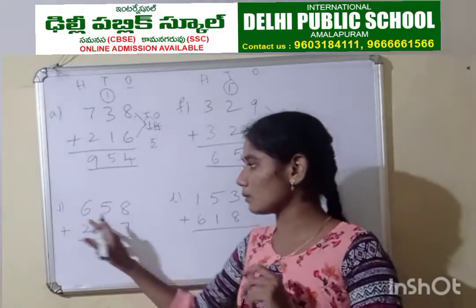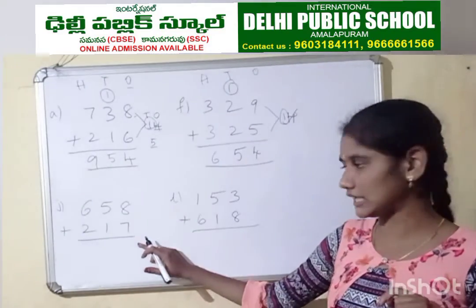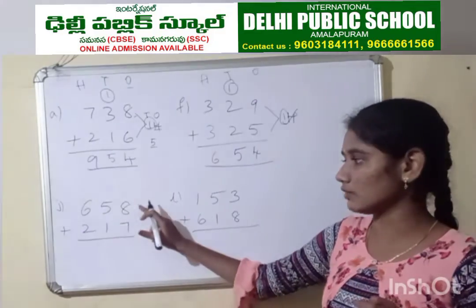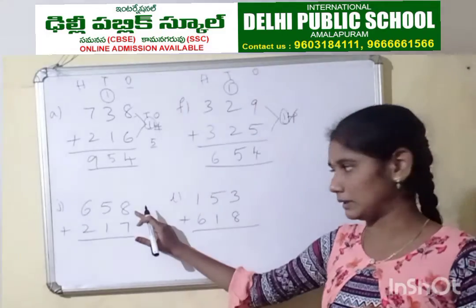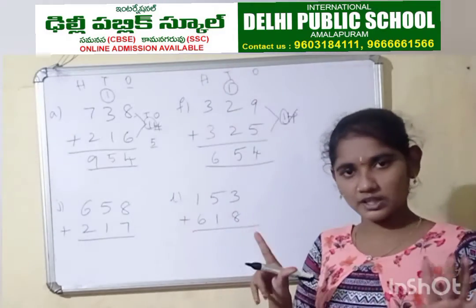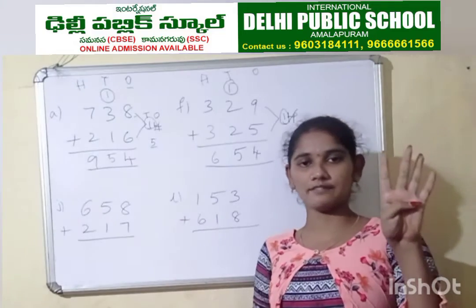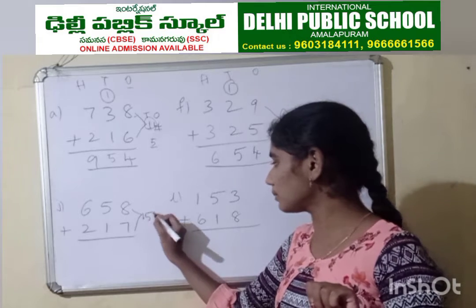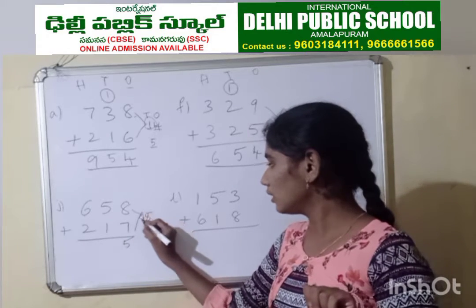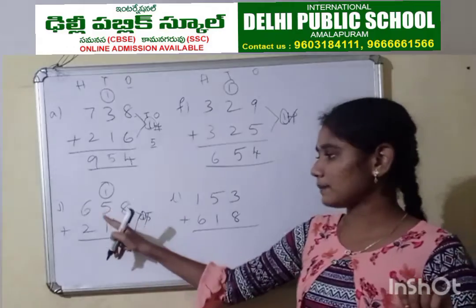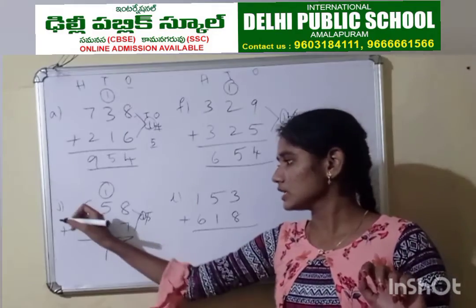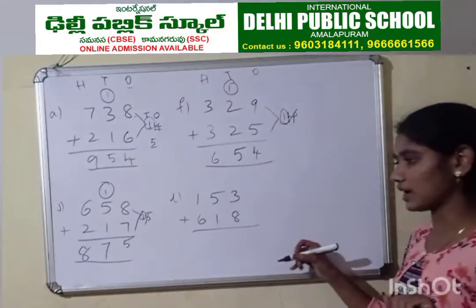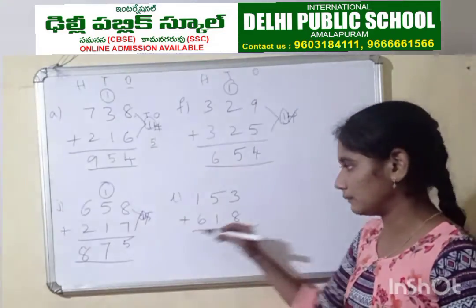Let's see another problem. 658 plus 217. 8 plus 7: keep 8 in mind, take 7 fingers. Count 8 after: 9, 10, 11, 12, 13, 14, 15. Again you got a 2-digit number. So write 5 here and 1 as a carry forward. Then 5 plus 1 is 6, and 6 plus 1 is 7. Then 6 plus 2 is 8. So the answer is 875. Check your answer with me — even the same.